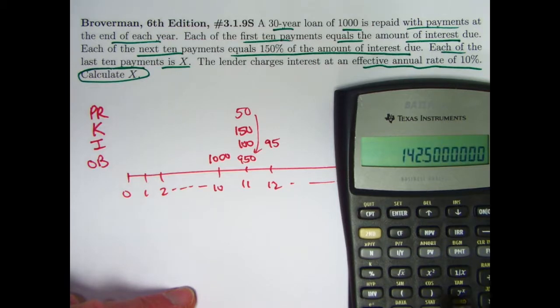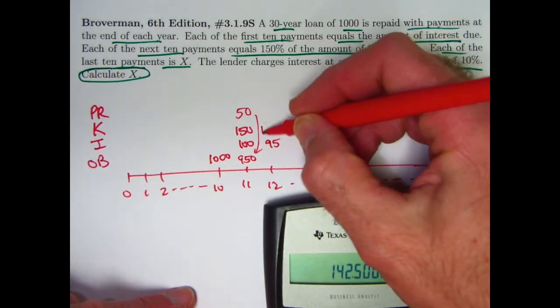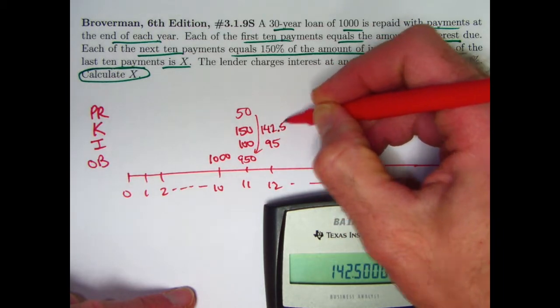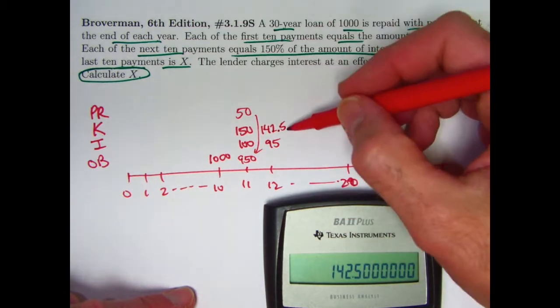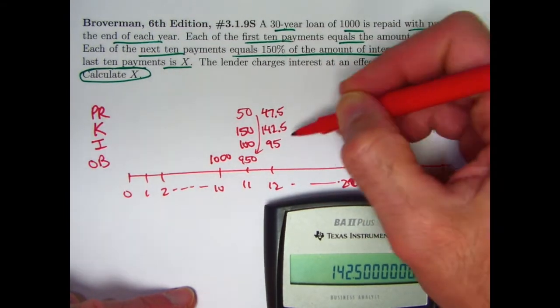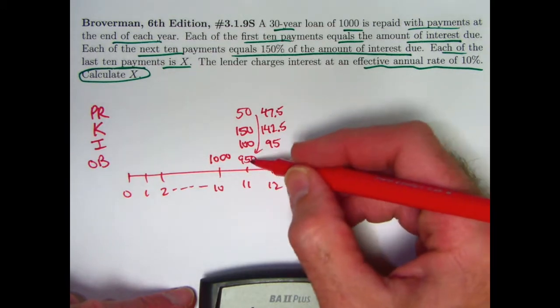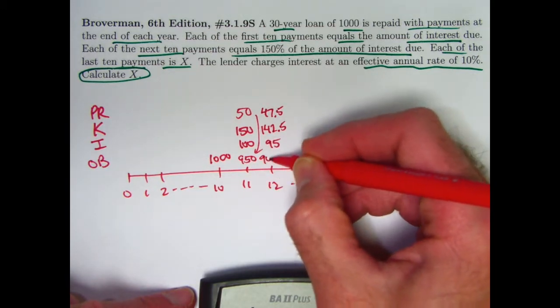your payment amount is going to be 142.5, which means the difference, 142.5 minus 95, which is 47.5, is the amount that principal is reduced. So the next balance goes from 950 down to 902.5.